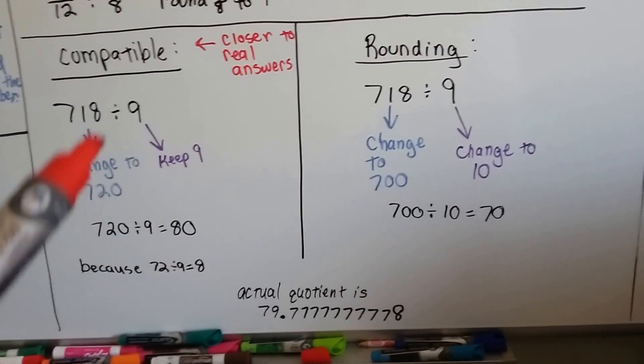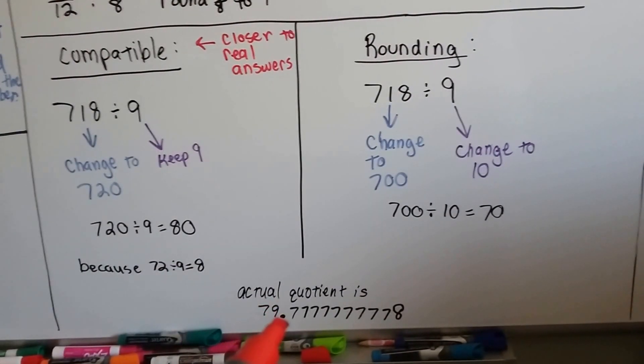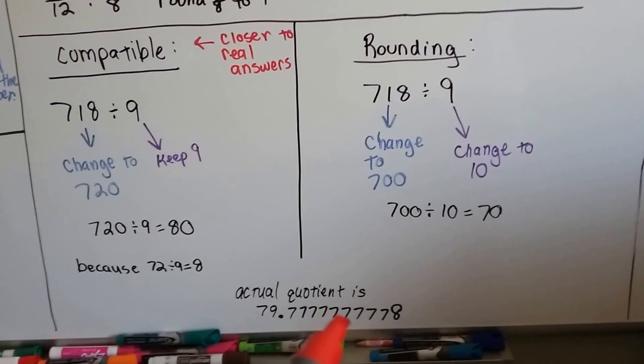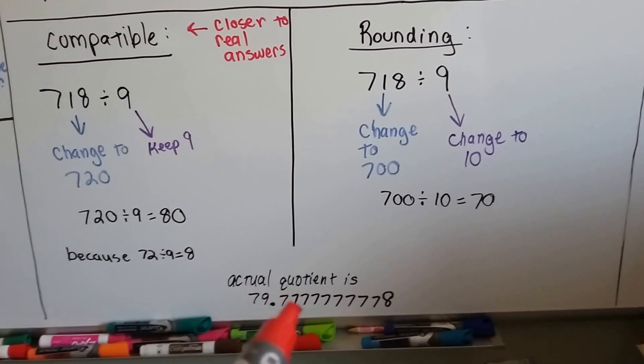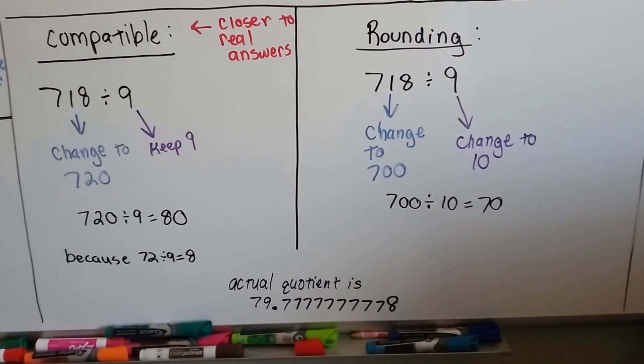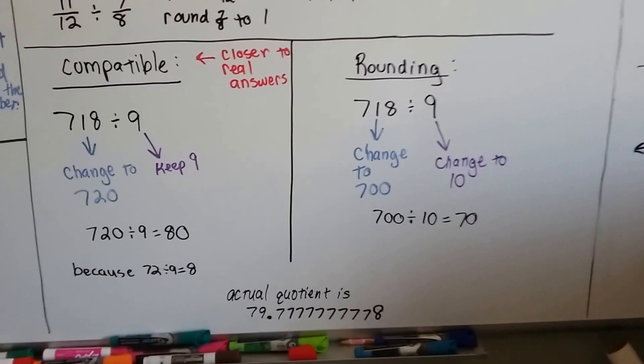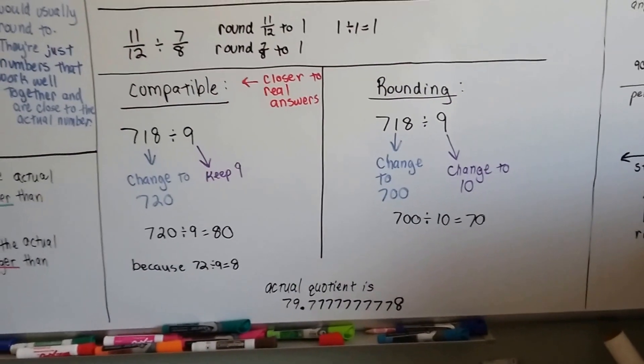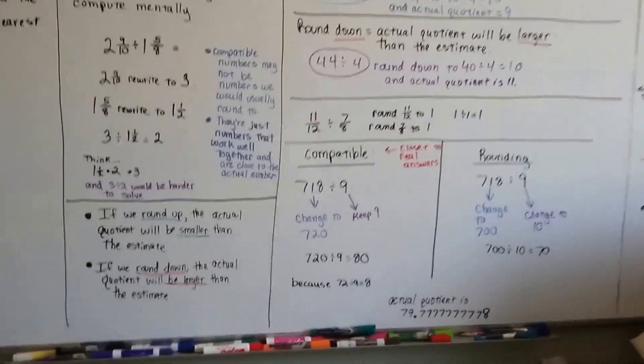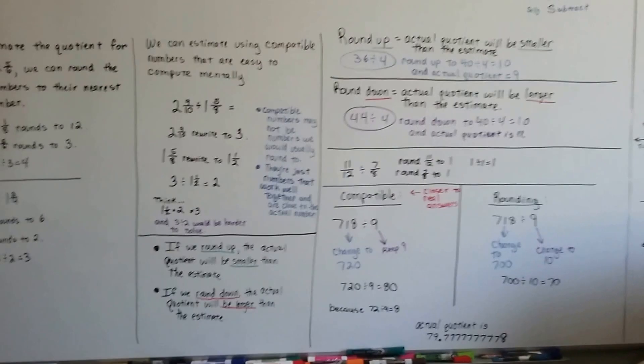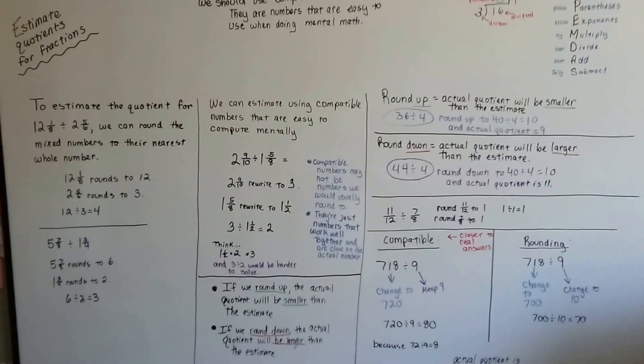The actual number for seven eighteen divided by nine is seventy-nine point, and then there's nine sevens and an eight. That could have been rounded to point seven eight, but I wanted to show the real answer. So do you see the difference between compatible numbers and rounding? The rounding is not as accurate as compatible numbers, and compatible numbers are easier to work with.